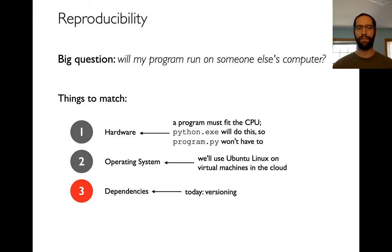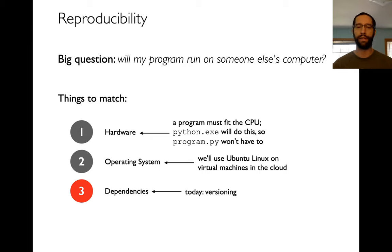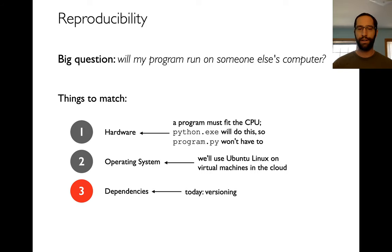We're going to pick up where we left off last time, answering this big question: will my program run on someone else's computer? This is a question of reproducibility. We have to make sure the hardware fits, but the Python interpreter takes care of that. We have to worry more about the operating system. And the third thing we have to worry about are dependencies.